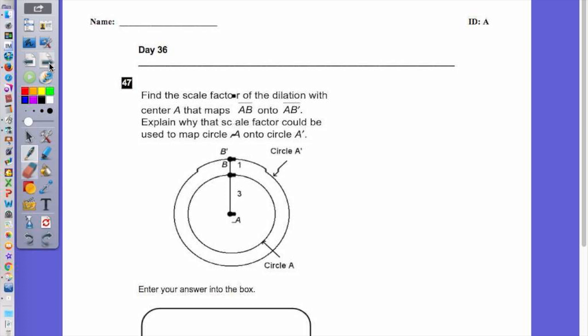For number 47, when they're asking you why the scale factor could be used to map a circle onto another circle, basically what they want you to get the gist of is that any circle, however you dilate it, is going to be similar to any other circle. So you can take any circle and by dilating it, by making it smaller or larger, map it onto another circle. All circles are similar. That's really what they want you to get there.